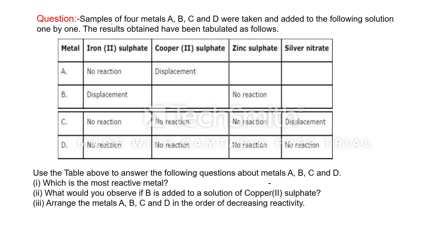Now a textbook question: samples of four metals A, B, C, and D were taken and added to solutions one by one. The results are tabulated: metal A does not react with iron(II) sulfate but displaces copper from copper(II) sulfate. Metal B displaces iron from iron(II) sulfate. Metal C shows no reaction with iron(II) sulfate, copper(II) sulfate, or zinc sulfate. Metal D shows no reaction with any of the solutions including silver nitrate.